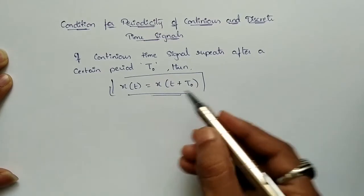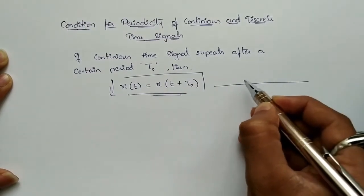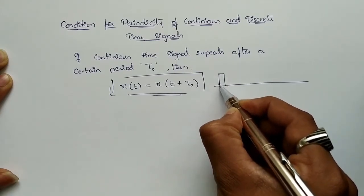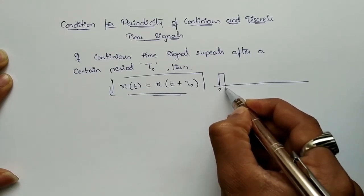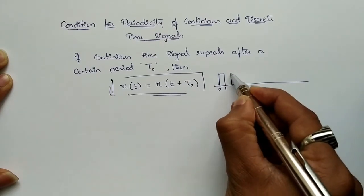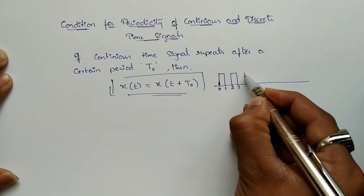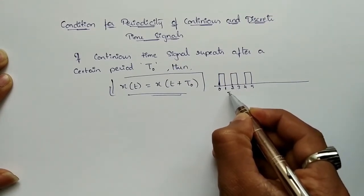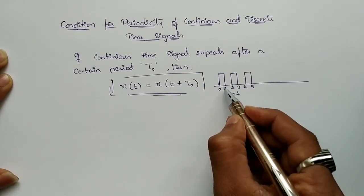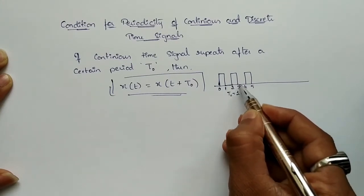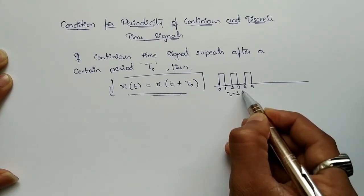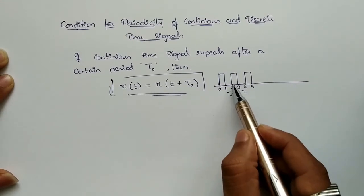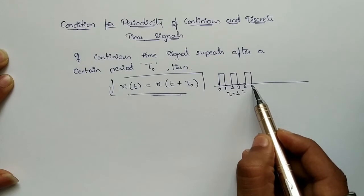For example, if a continuous time signal starts at zero and ends at one, then starts again at two and ends at three, and again starts at four and ends at five — the signal is repeating after a duration T₀ = 1. From one to two there is a time gap of one second, and from three to four there is again a gap of T₀ = 1. The signal repeats after every T₀.